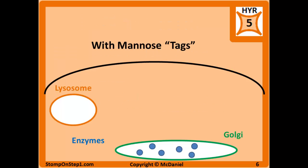Before we can talk about I-cell disease, we need to discuss how mannose-6-phosphate functions normally. Imagine the blue dots here are enzymes you've made that are destined for the lysosome. When they're in the Golgi, they're going to have mannose-6-phosphate tags added to them. This tag is a signal for the cell that tells it these enzymes need to be transported to the lysosome. After they leave the Golgi, they head towards the lysosome along the microtubule tracks.